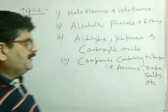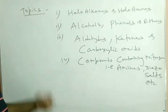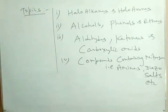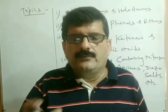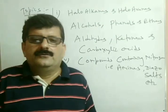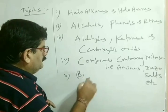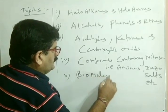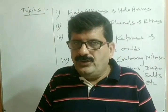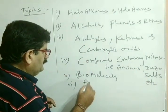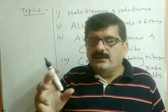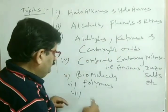Diazonium salts etc. are involved in your fourth lesson. All four lessons are the part of pure organic chemistry. The fifth lesson is biomolecules. The sixth lesson is polymers. And the last one is chemistry in everyday life.